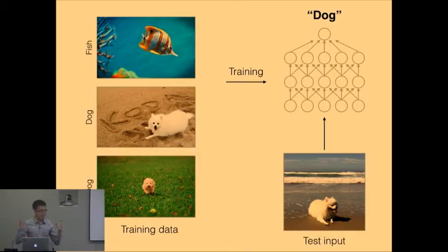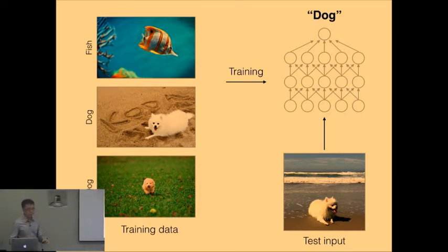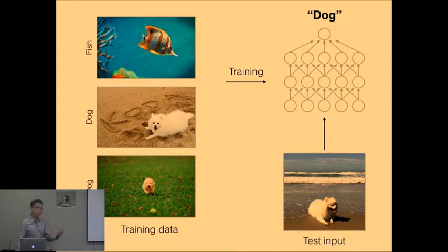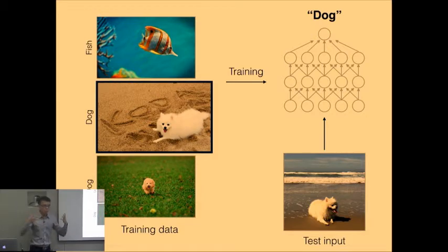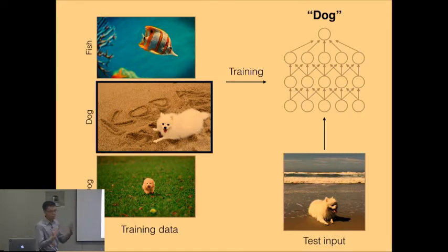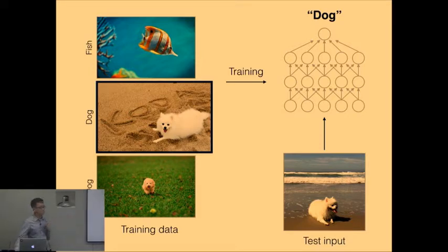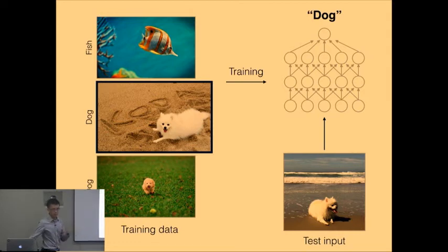What does it mean for training data to be responsible for a given prediction? What we're going to do is take our training examples one by one and up-weight them — try to make them a bit more important so that the model tries harder to fit that particular training point — and then see what effect this has on the prediction. For example, given this model, if we make a training image slightly more important to the model, and the prediction changes a lot — say the model becomes more confident that is in fact the dog — then we say that example has high influence. If the model totally doesn't care whether this image is there or not, then that image has low influence on the prediction.